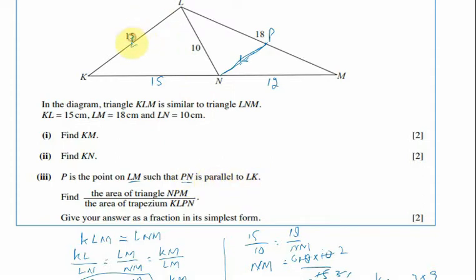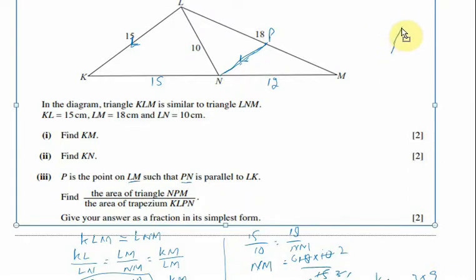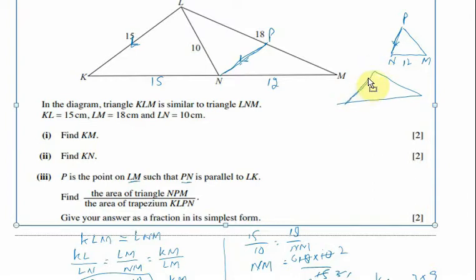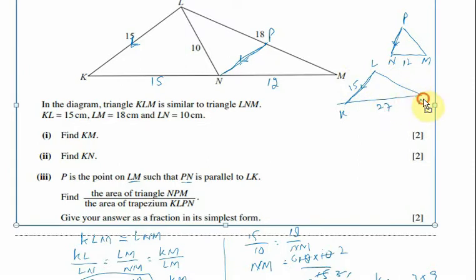These two lines are parallel, and we have to find the area of the triangle. There are two triangles: the smaller one is triangle NPM with side 12, and the larger triangle KLM with sides KL=15, KM=27, and LM=18. One triangle is A and the whole is B.